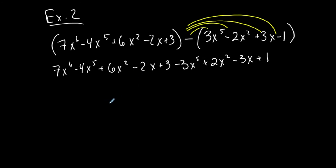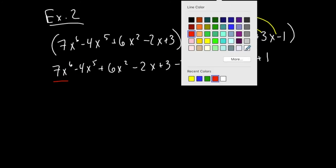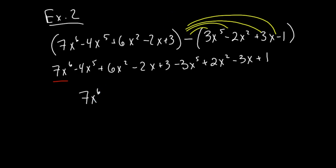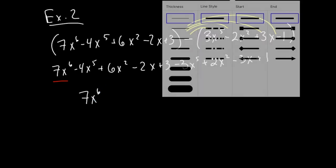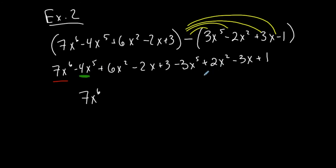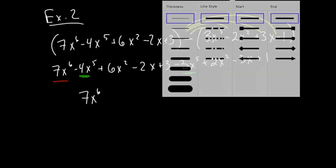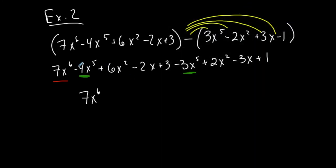I want my final result to be in standard form. So I'm going to go with the highest exponent: 7x to the 6th. It has no like terms — none of my other terms have an x to the 6th — so I just bring that down. My next highest exponent is a 5th. I have negative 4x to the 5th and negative 3x to the 5th — those are like terms. Negative 4 minus 3 is negative 7, and I maintain the x to the 5th. Work the coefficients, maintain the variable portion.